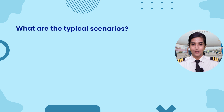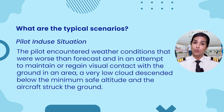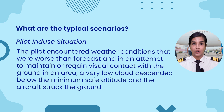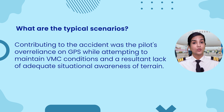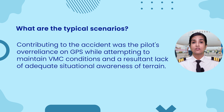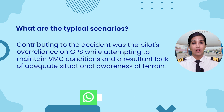What are the typical scenarios that occur? One is a pilot-induced situation. The pilot encountered weather conditions that were worse than forecast, and in an attempt to maintain or regain visual contact with the ground in an area of very low cloud, descended below the minimum safe altitude and the aircraft struck the ground. Contributing to this accident was the pilot's over-reliance on GPS while attempting to maintain VMC conditions and a resultant lack of adequate situational awareness of terrain.